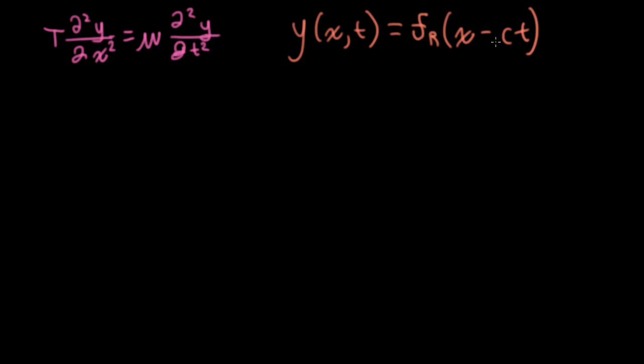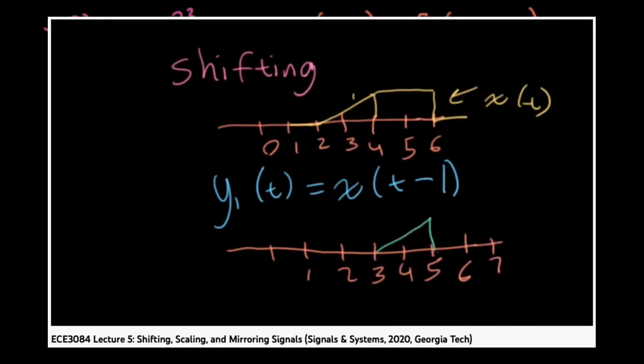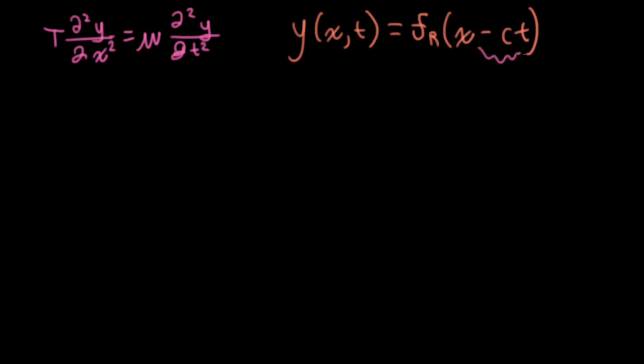Now, this x minus ct, if you'll remember from EC3084, this minus stuff here indicates that we're shifting to the right in space as time is increasing, assuming c is positive, which we're going to say it is. So this is a waveform that's going to the right. This is called a traveling wave.